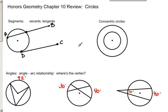A segment that intersects a circle twice is called a secant segment. In this diagram, segment AB is a secant. A segment that intersects a circle just once is called a tangent segment. CD is a tangent segment. Remember that if a radius is drawn to the point of contact with the tangent, it always forms a right angle.